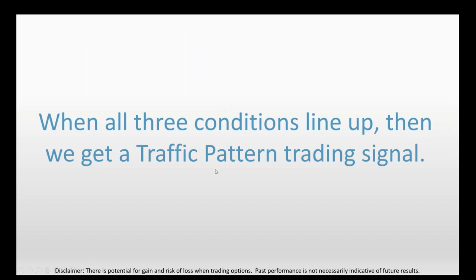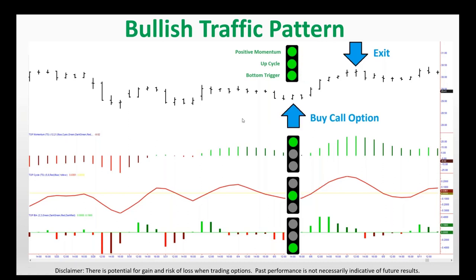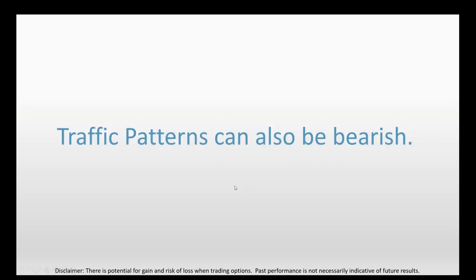When all three conditions line up, we get the traffic pattern trading signal. We have initial momentum on the top momentum indicator, then continuation momentum turning on the top green light, then the up cycle turning on the middle green light, then the troughs trigger turning on the bottom green light. When we get all three of these things lining up, that's when we recommend buying a call option.